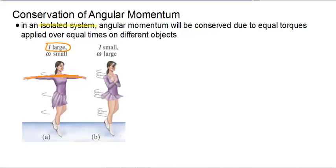When she brings her arms in, now all of her mass is located in the center, so her I value has decreased.